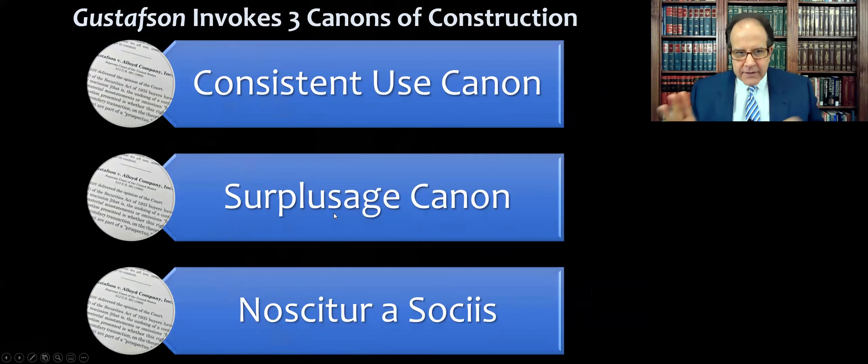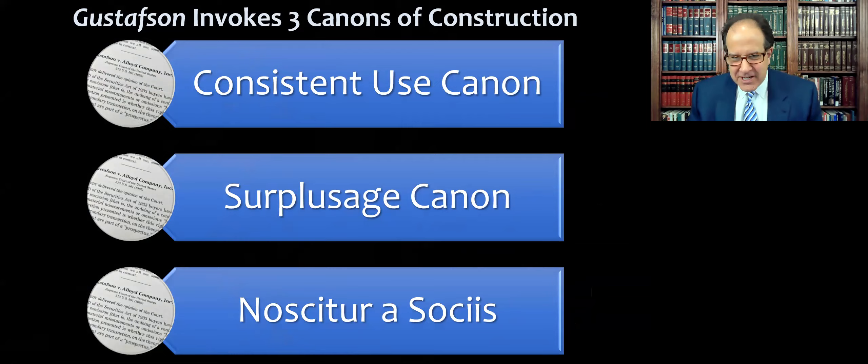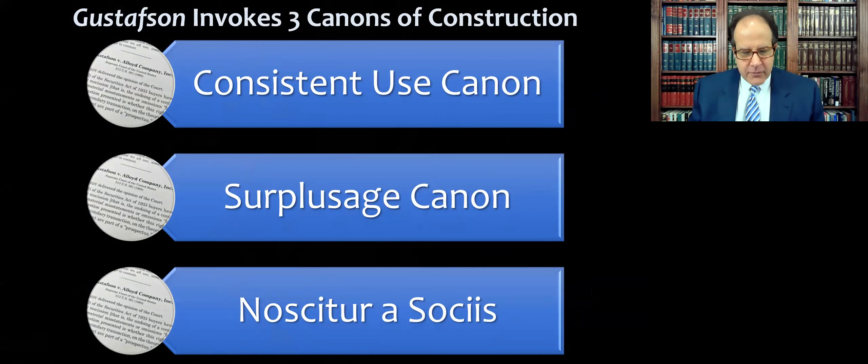Here's our preview of the three canons. These are the three takeaways from this case: the consistent use canon, the surplusage canon — which some people insist on calling the anti-surplusage canon or the anti-superfluity canon — and noscitur a sociis.